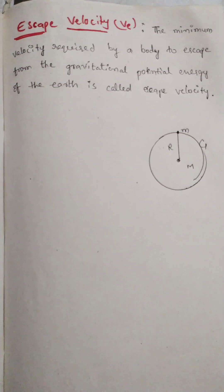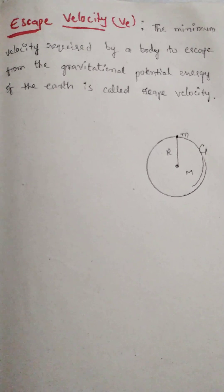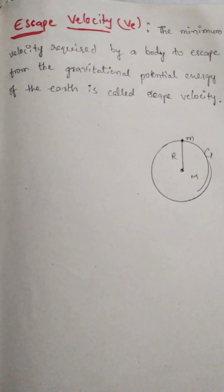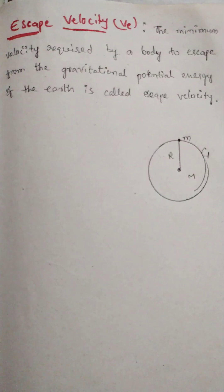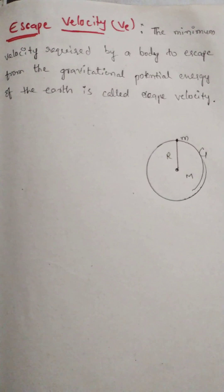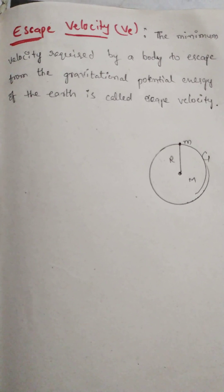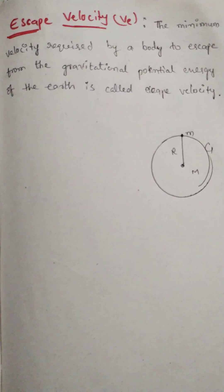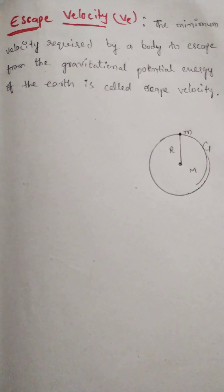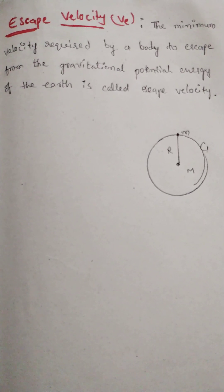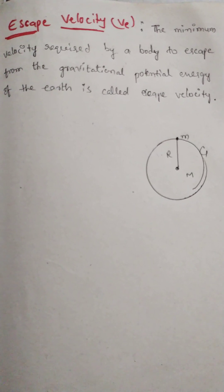In this video I am going to explain escape velocity derivation. First we have to know the definition — what is meant by escape velocity. The name itself indicates it: the body has to escape from the Earth's gravitational field or gravitational pull. The definition is: the minimum amount of velocity required by a body to escape from the Earth's gravitational potential energy is called escape velocity.